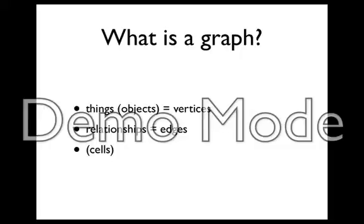In MXGraph specifically, groups can be created as well as all different types of possible combinations, and these would be referred to as cells. In addition, each individual object, whether it's a thing or a relationship, can be referred to as a cell as well. So everything inside of a graph, especially in MXGraph, would be considered a cell.